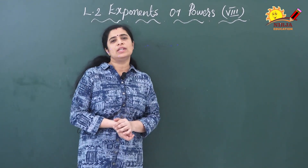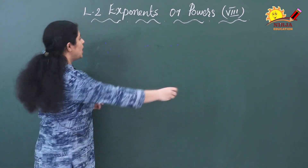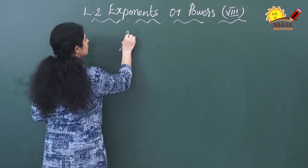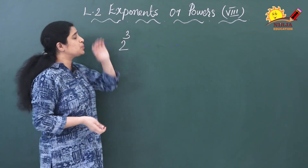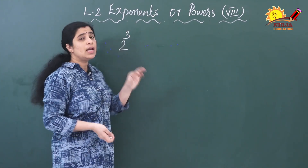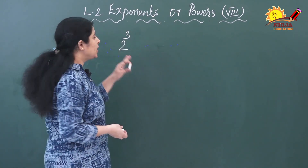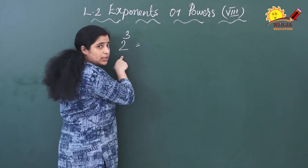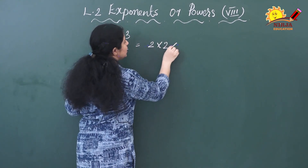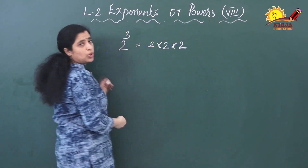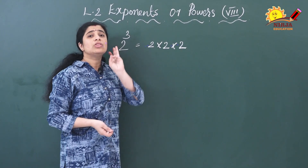Before going to the chapter, we will discuss what is an exponent and what is exponent notation. If I am writing 2 raised to 3, this is known as the exponent notation. The meaning of this is that you are multiplying 2 three times, that means 2 multiplied by 2 multiplied by 2. This is the meaning of 2 raised to 3.